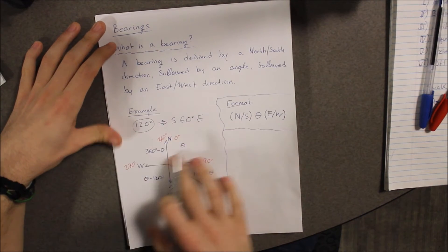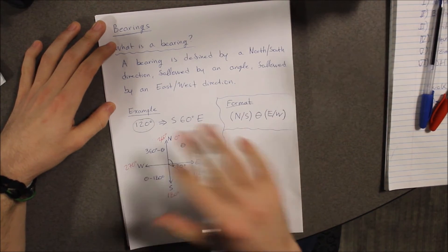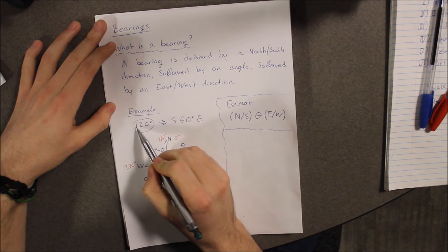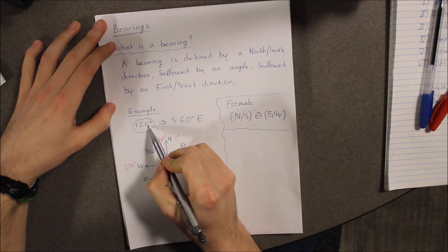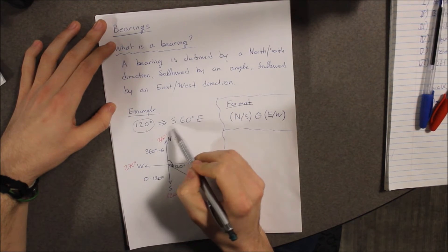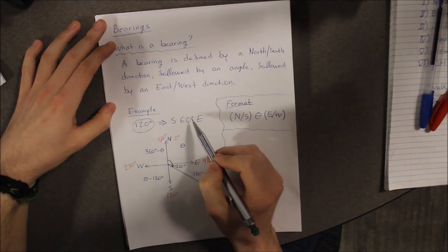Now, I'm going to use this example right here and I'll walk you through how to do it, just so you know how to do it for the following step. 120 degrees is equal to south 60 degrees east.